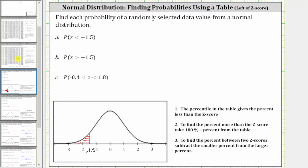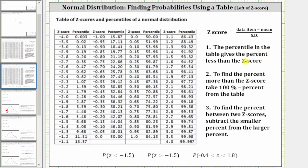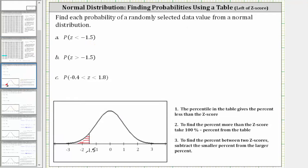Going to our table, the percentile on the table gives a percent less than the z-score. So to find the probability the z-score is less than negative 1.5, we simply locate the z-score of negative 1.5 in the table. The corresponding percentage will give us the probability. The z-score of negative 1.5 is located here, and the corresponding probability is 6.68%.